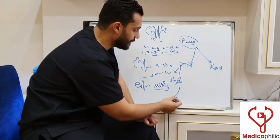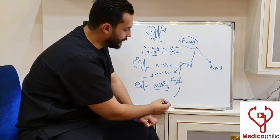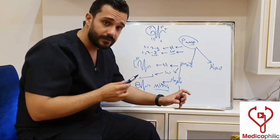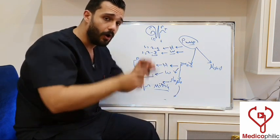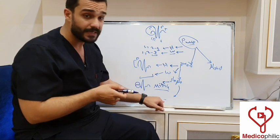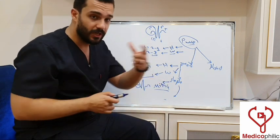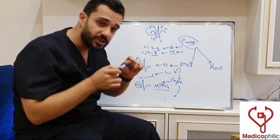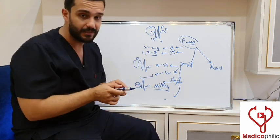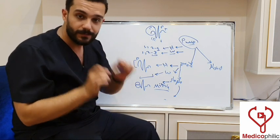Another shape abnormality occurs when the P wave has a different shape from all the other P waves in the ECG. The height and width may be within the normal range, but the shape is distinct from the rest. This is called an atrial ectopic beat.